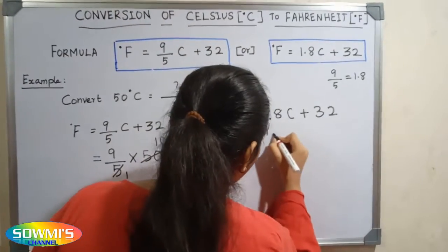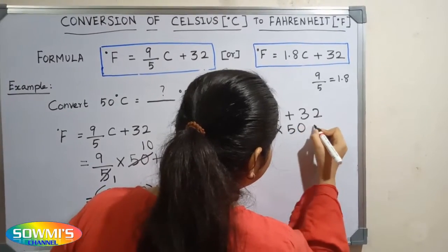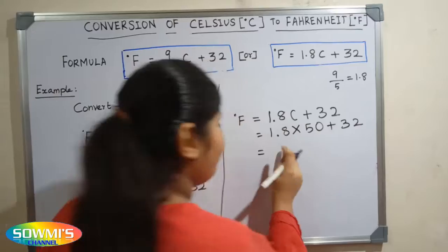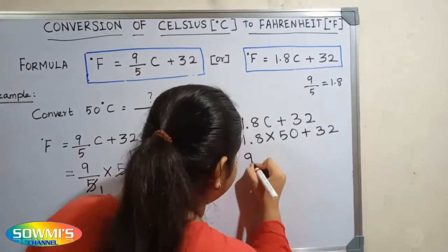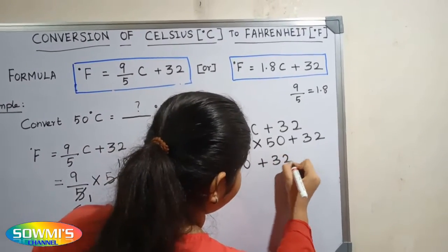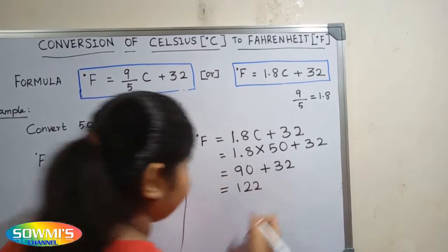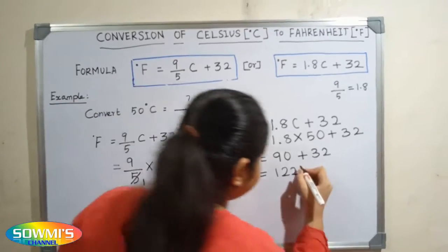So, 1.8 multiply 50 plus 32. 1.8 multiply 50 is equal to 90. 90 plus 32 is equal to 122. So, the answer is 122 degree Fahrenheit.